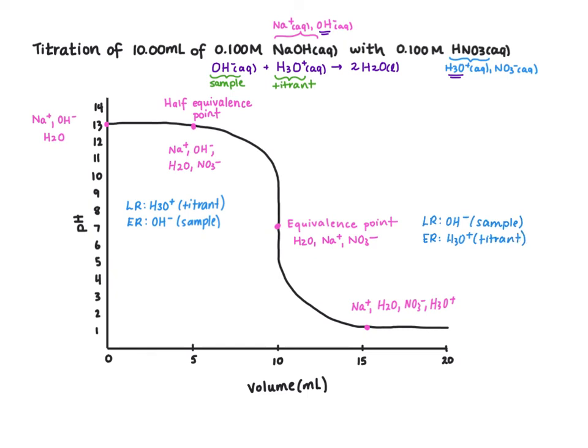So this is the general outline of a strong base titrated with a strong acid. In terms of an indicator, we can find indicators on page 10 in your data booklet. We want to choose an indicator that's going to change color as close as possible to our equivalence point, so as close as possible to a pH of 7.